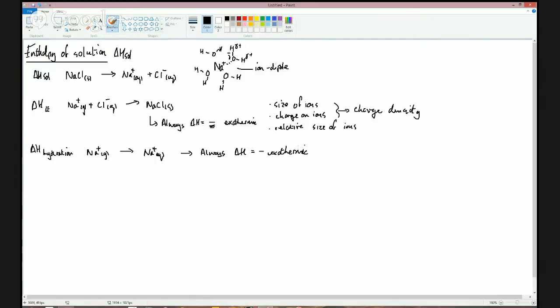Very positive ions will have a higher charge density. Very small ions will have a high charge density. Combine the two together and you get an extremely high charge density. So for example, a magnesium 2 plus ion has a very high charge density. Aluminium 3 plus, even higher. And remember, when you remove an electron from an atom, it shrinks because you've got the same number of protons there, but fewer electrons. Those fewer electrons are pulled in more tightly.